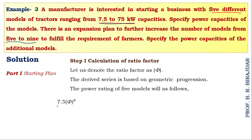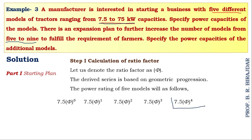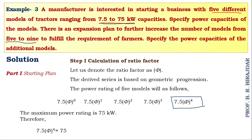φ raised to zero equals one, so the first model is simply 7.5. The second model equals the first model multiplied by the ratio factor, and the third model equals the second multiplied by the ratio factor. In this way, the five models are derived. The fifth model is 7.5 × φ⁴, and since the highest model must equal 75 kilowatt, we set 7.5 × φ⁴ = 75.